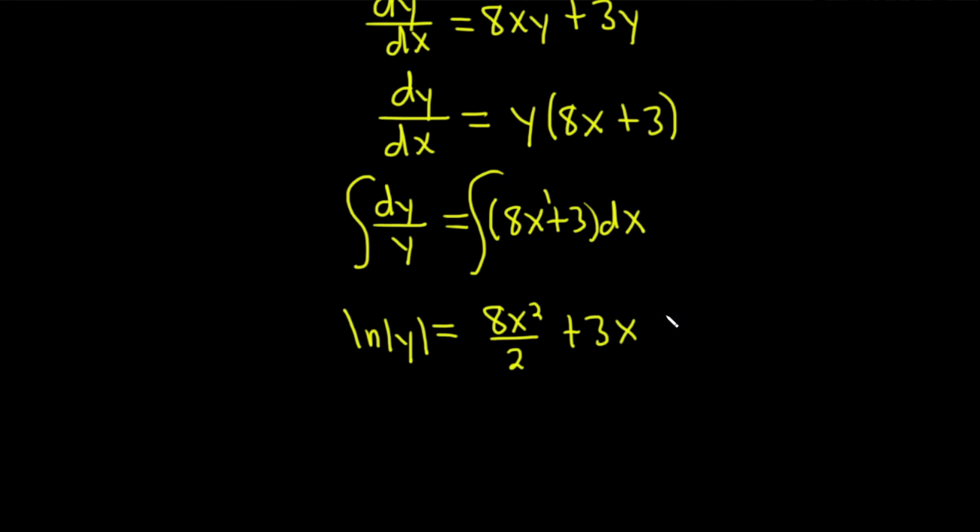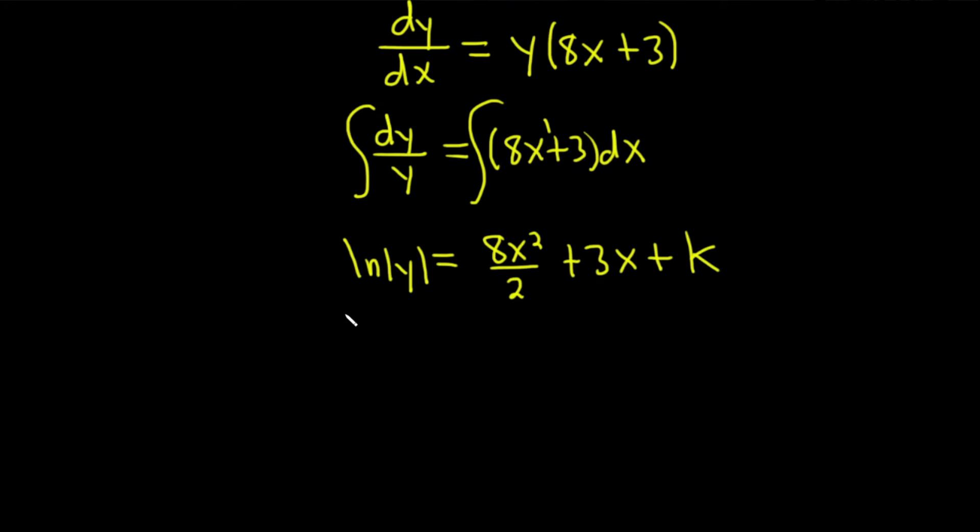And then we're supposed to add a constant of integration. You can call it c. You can call it c1. I don't want to call it c yet because it's going to change multiple times. So I'm going to call it k. So now we have natural log of the absolute value of y is equal to 4x squared plus 3x plus k.